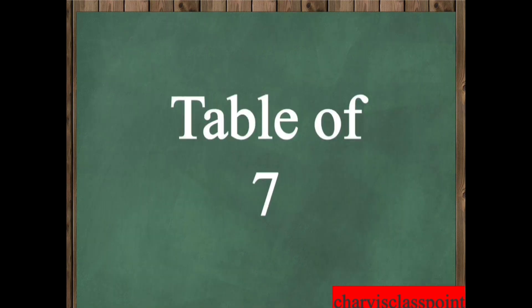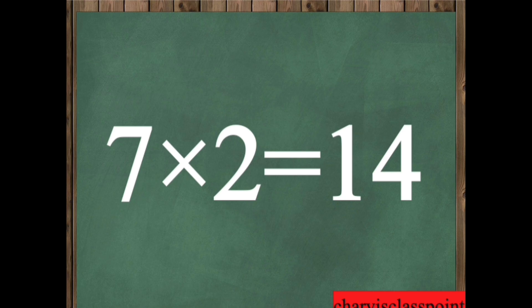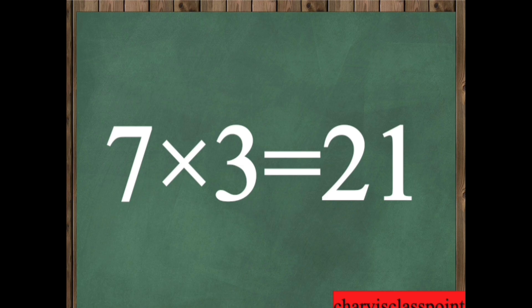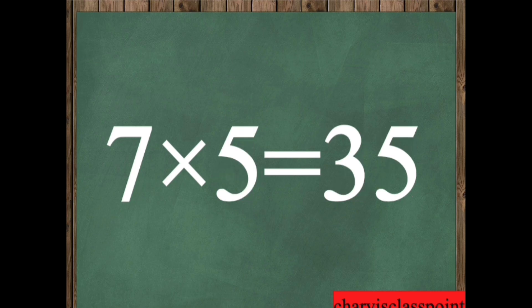Table of seven. Seven, one, seven. Seven, two, fourteen. Seven, three, twenty-one. Seven, four, twenty-eight. Seven, five, thirty-five.